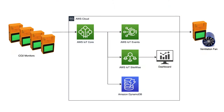Here is the overall architecture of the system. The fan and the CO2 monitors are not directly communicating via AWS IoT Core. There are AWS IoT Events detectors in between, and they decide when to turn on and off the fan.